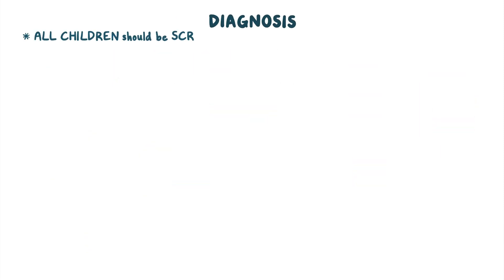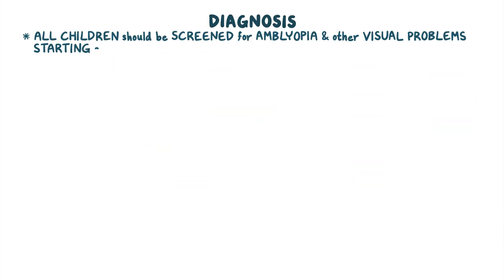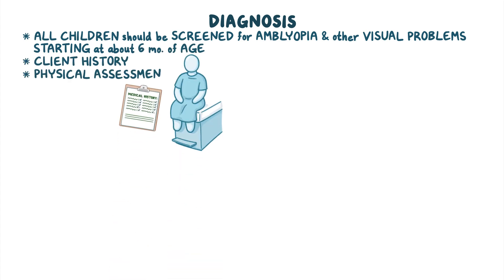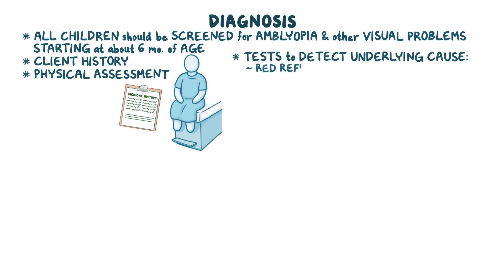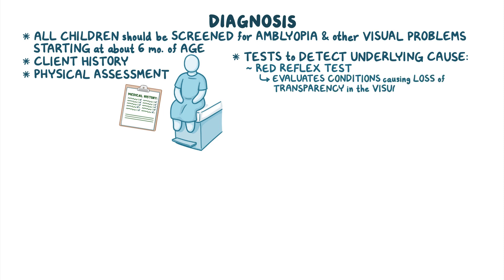All children should be screened for amblyopia and other visual problems starting at about six months of age. The diagnosis of amblyopia starts with the client's history and physical assessment, followed by tests to detect the underlying cause. These tests include the red reflex test, which evaluates conditions causing loss of transparency in the visual axis.